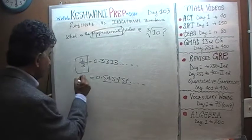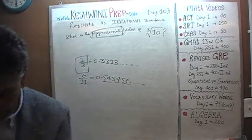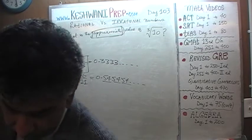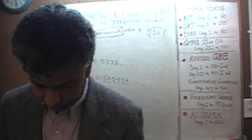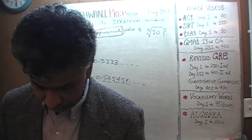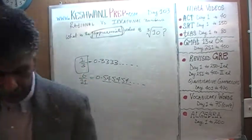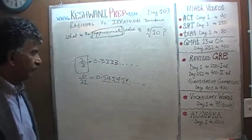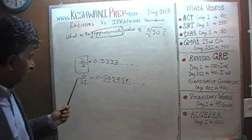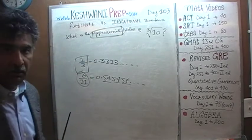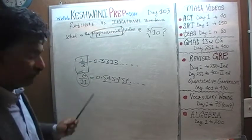We saw yesterday that it was 6 over 11. I'm going to quickly verify that, going purely by memory. 6 divided by 11 — yep, 6 divided by 11 is 0.545454. As you can clearly see, this is a rational number for the very simple fact that it can be written as a fraction.